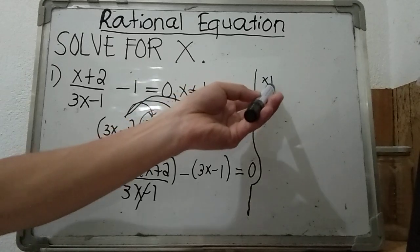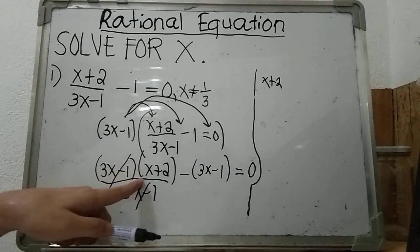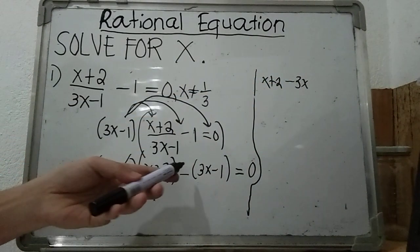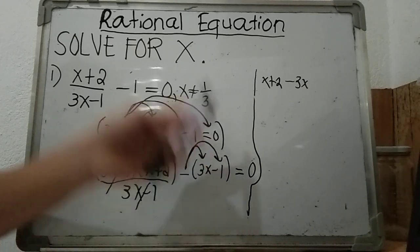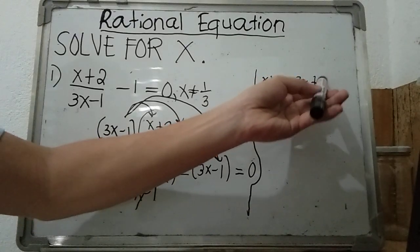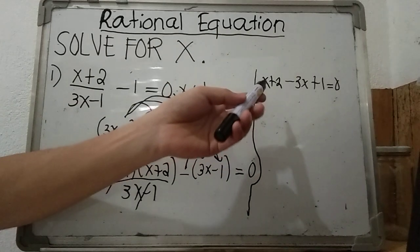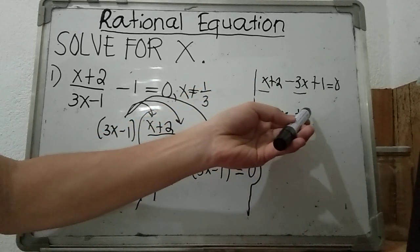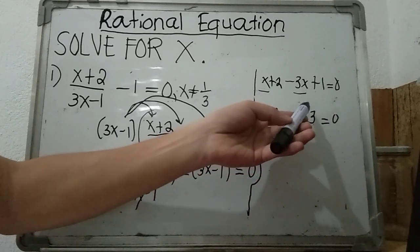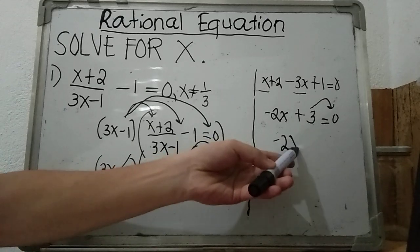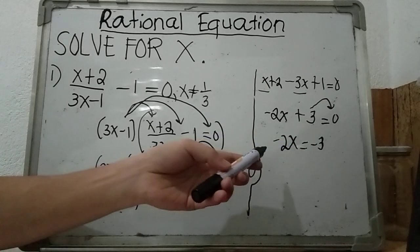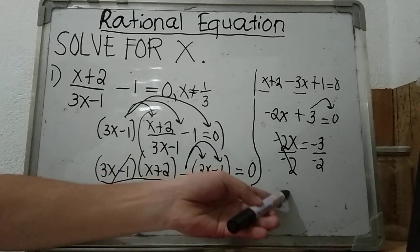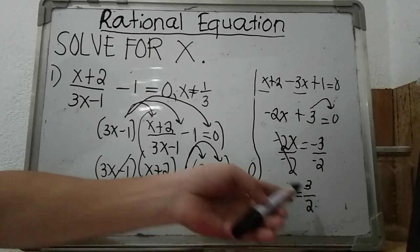Continuing: x plus 2 minus, distributing the negative to 3x gives negative 3x, and negative times negative 1 gives plus 1, equals 0. Combining x and negative 3x gives negative 2x; combining 2 and 1 gives positive 3, equals 0. Transposing positive 3 to the right: negative 2x equals negative 3. Dividing both sides by negative 2, x equals 3 halves — the same result.